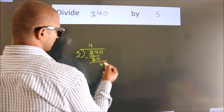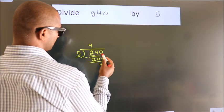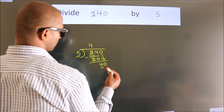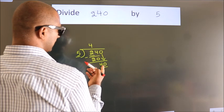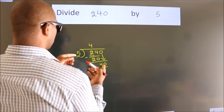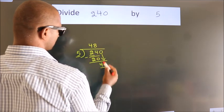After this, bring down the beside number. So 0 down. So 40. When do we get 40 in the 5 table? 5 times 8 equals 40.